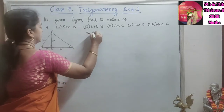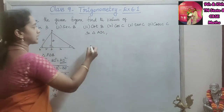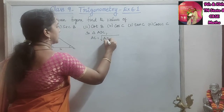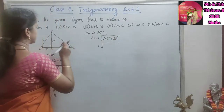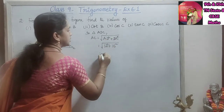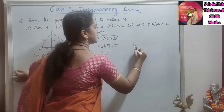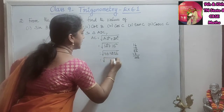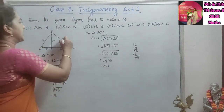Then in triangle ADC, we now have AD = 12 and DC = 16. We find the hypotenuse side: AC equals root of AD squared plus DC squared. So that is root of 12 squared plus 16 squared, which is root of 144 plus 256, equals root of 400, which is 20 units. So 20 is the hypotenuse side.